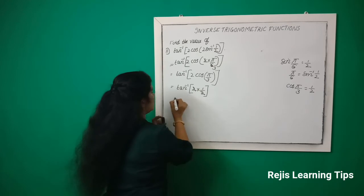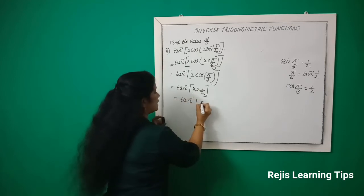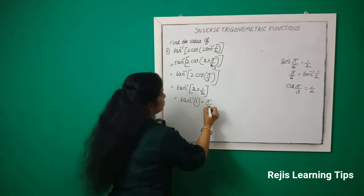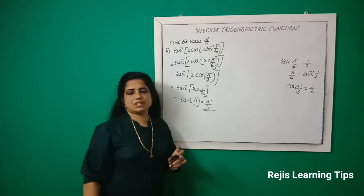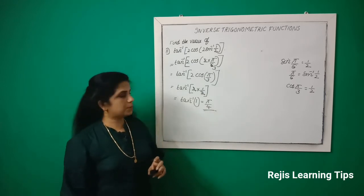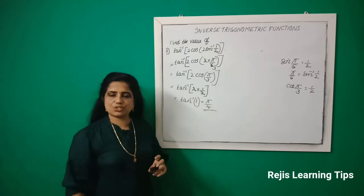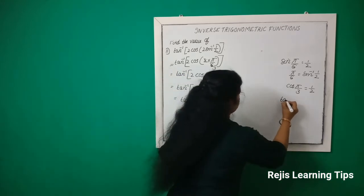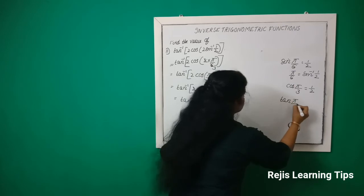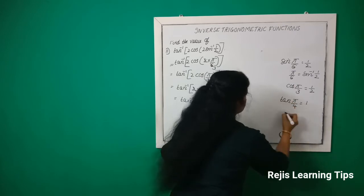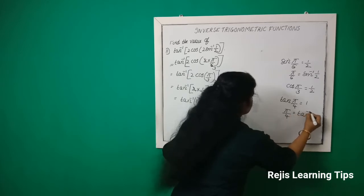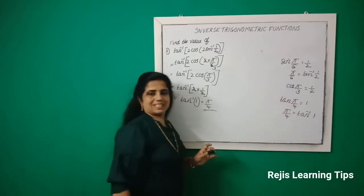This 2 and 2 cancel, then we will get tan inverse 1. Tan inverse 1 is equal to π/4, because tan(π/4) is equal to 1. Therefore, π/4 is equal to tan inverse 1. Understood?